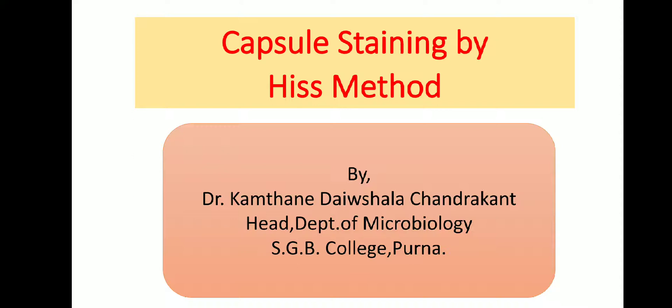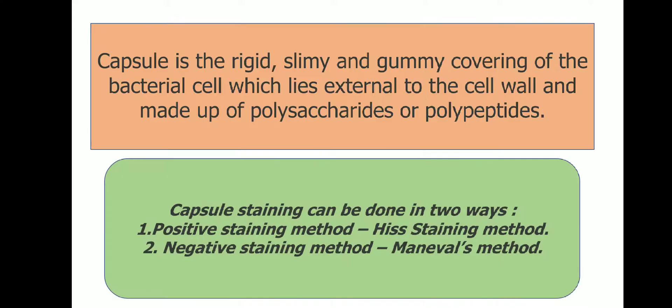Hello, welcome all. We discuss about the capsule staining by Hiss method. Capsule is the rigid, slimy and gummy covering of the bacterial cell that lies external to the cell wall. This capsule is made up of polysaccharides or polypeptides.